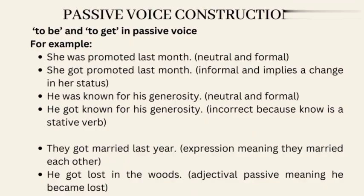The difference between 'to be' and 'to get' in passive voice is that 'to be' is more neutral and formal, while 'to get' is more informal and implies some kind of change or result. We can use 'to get' with action verbs but not with stative verbs. For example: 'She was promoted last month' — neutral and formal; 'She got promoted last month' — informal and implies a change in her status. 'He was known for his generosity' — neutral and formal; 'He got known for his generosity' — incorrect because 'know' is a stative verb. Sometimes 'to get' is not used as a passive voice construction but as part of an expression or adjectival passive, for example: 'They got married last year' — expression meaning they married each other; 'He got lost in the woods' — adjectival passive meaning he became lost.